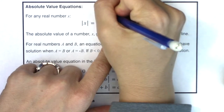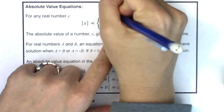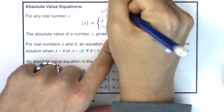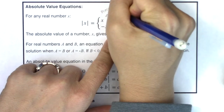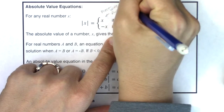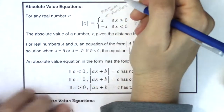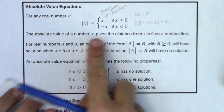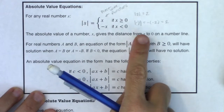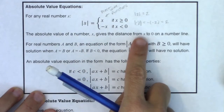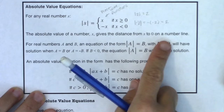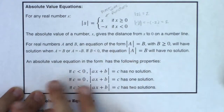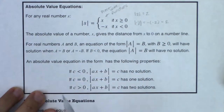That's a way to define the absolute value function, and we call this a piecewise function. We'll talk more about piecewise functions in a later section. The absolute value of a number x gives the distance from that value to zero on a number line. We don't care if it's left or right of zero — just the distance from zero.